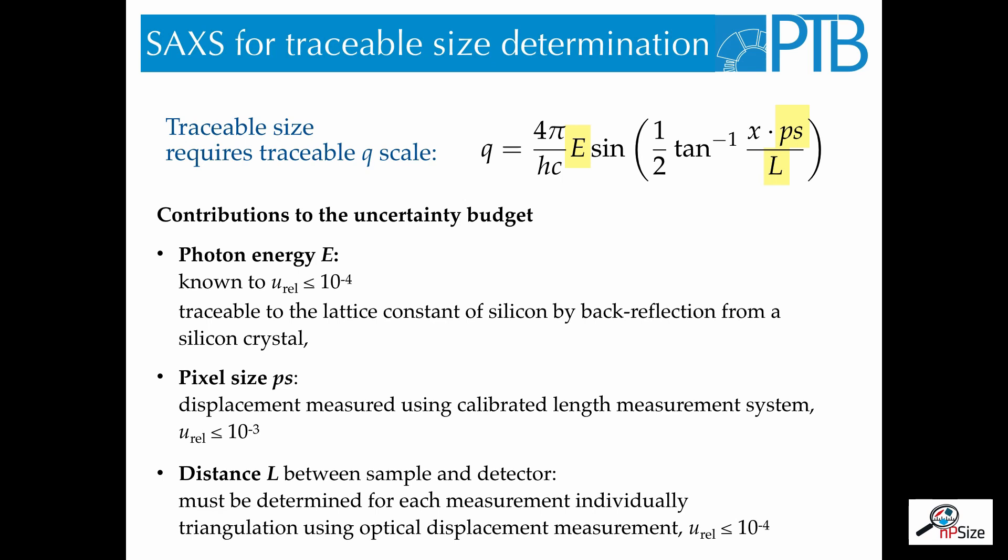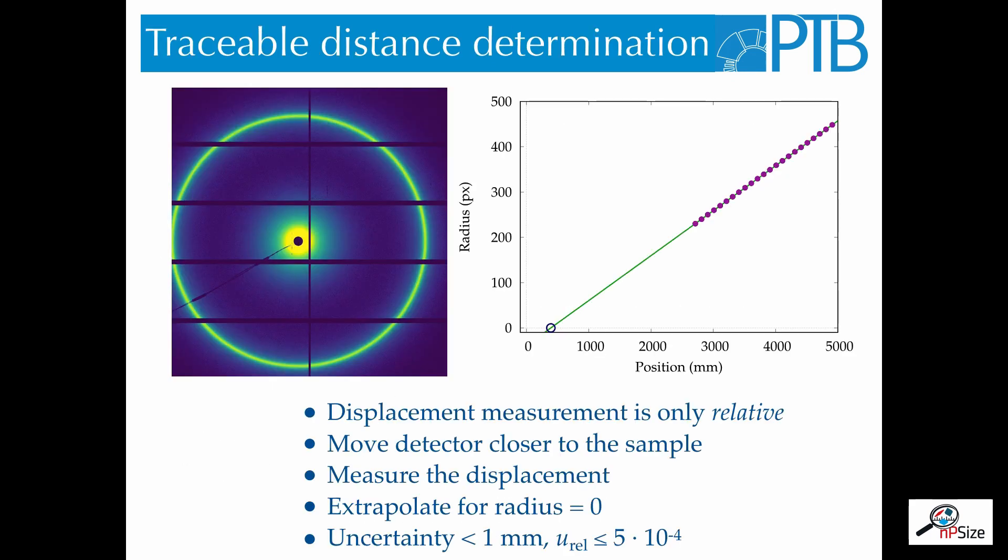Finally, the distance between sample and detector must be determined for each measurement individually. For this, we have optical encoders, which measure very accurately the position of the detector. But this optical measurement system gives us only a relative displacement of the detector. In order to get an absolute position, we use a standard sample.